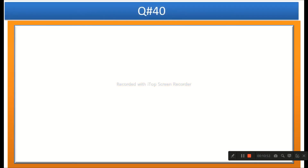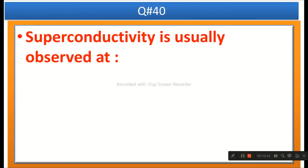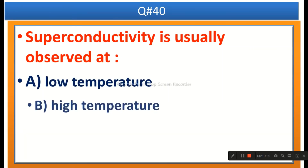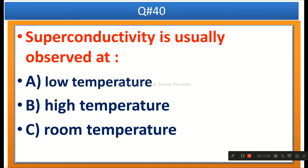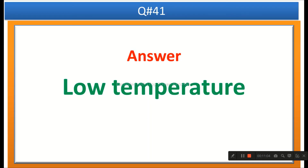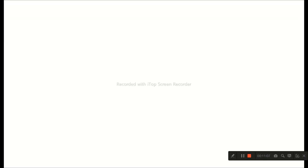The next question: Superconductivity is usually observed at — options are low temperature, higher temperature, room temperature, or none of these. The right answer is low temperature. Okay guys, goodbye.